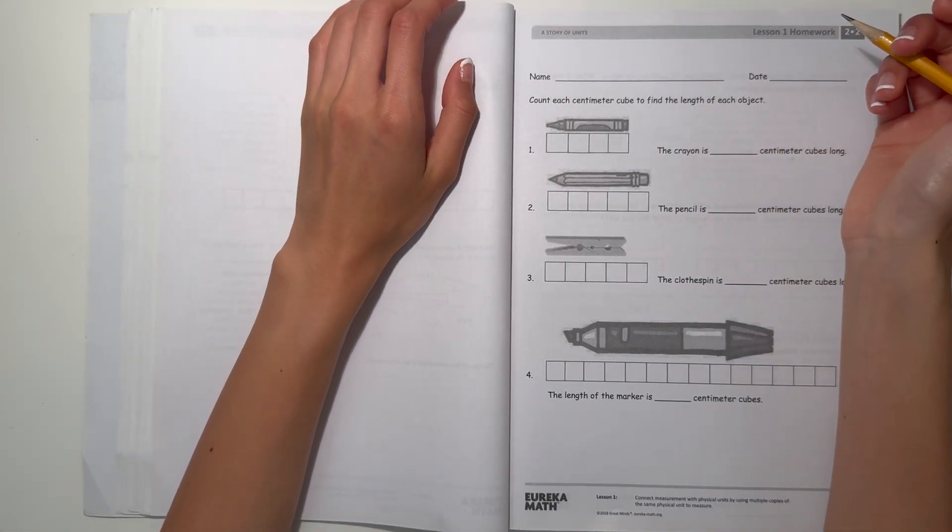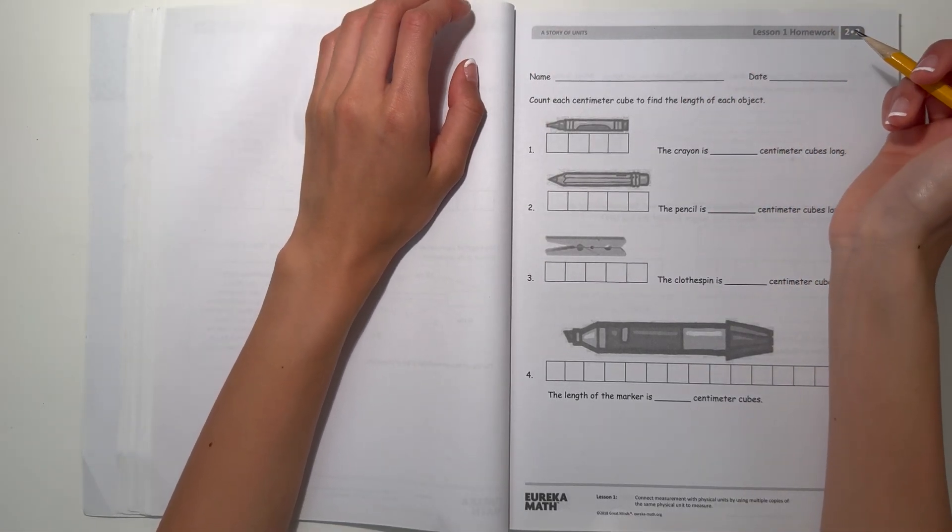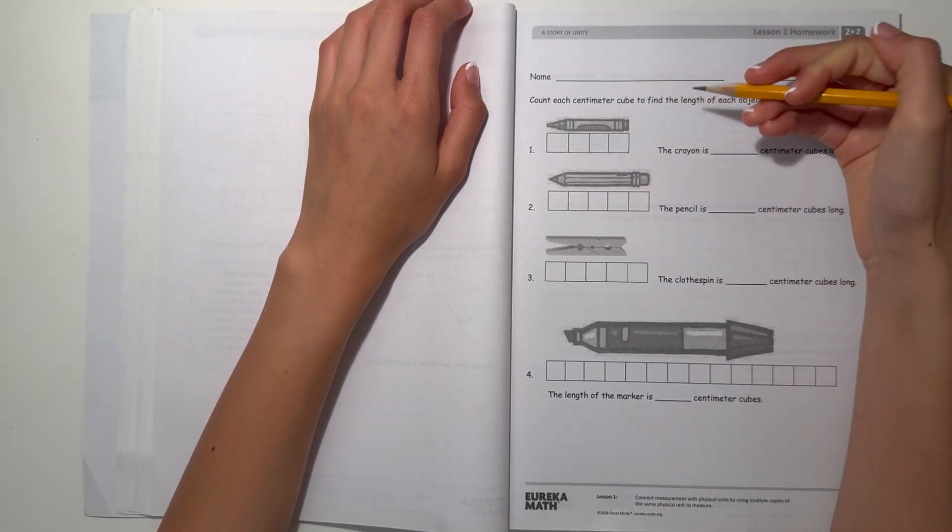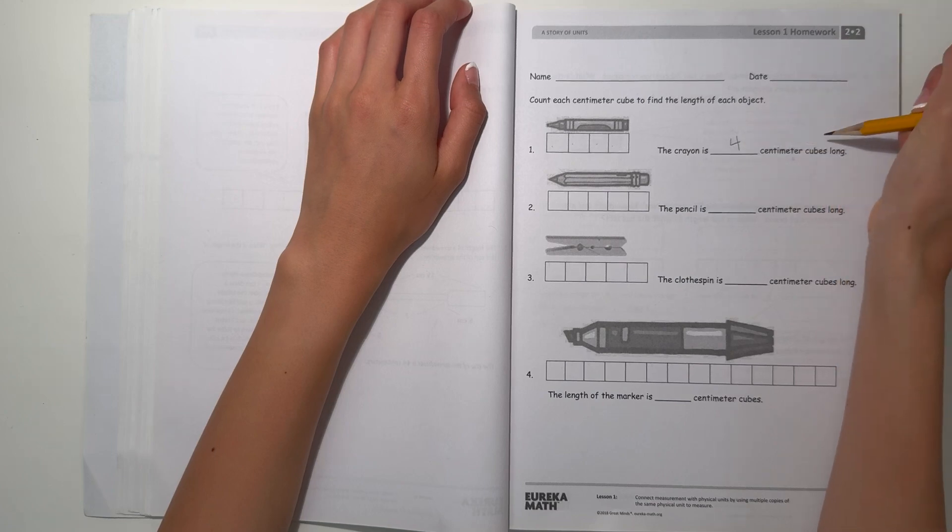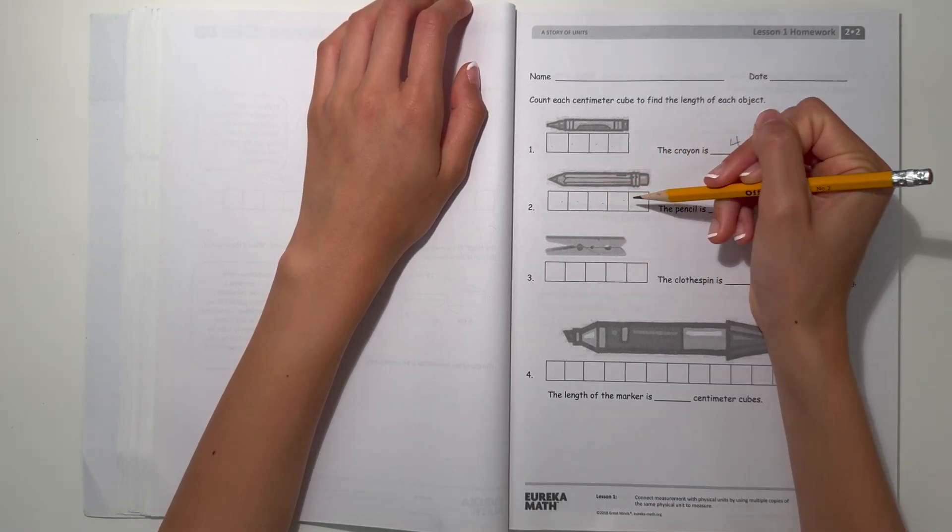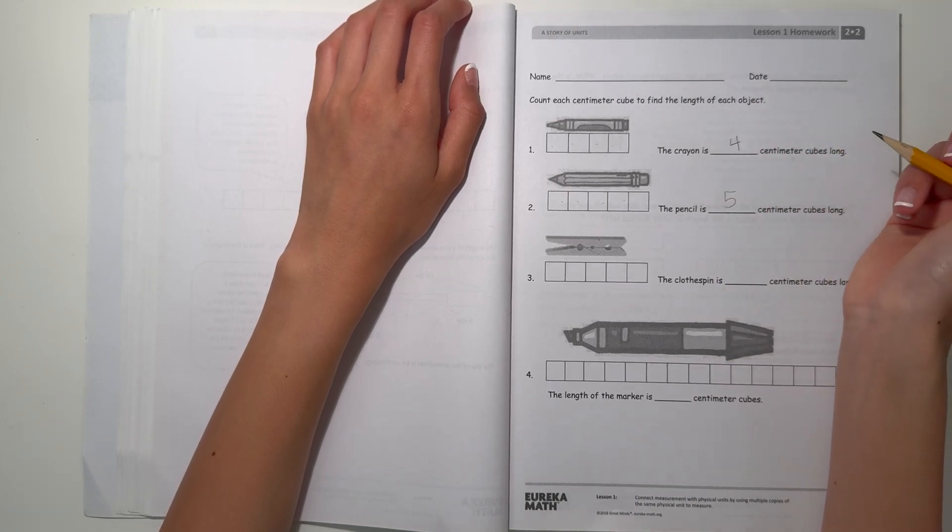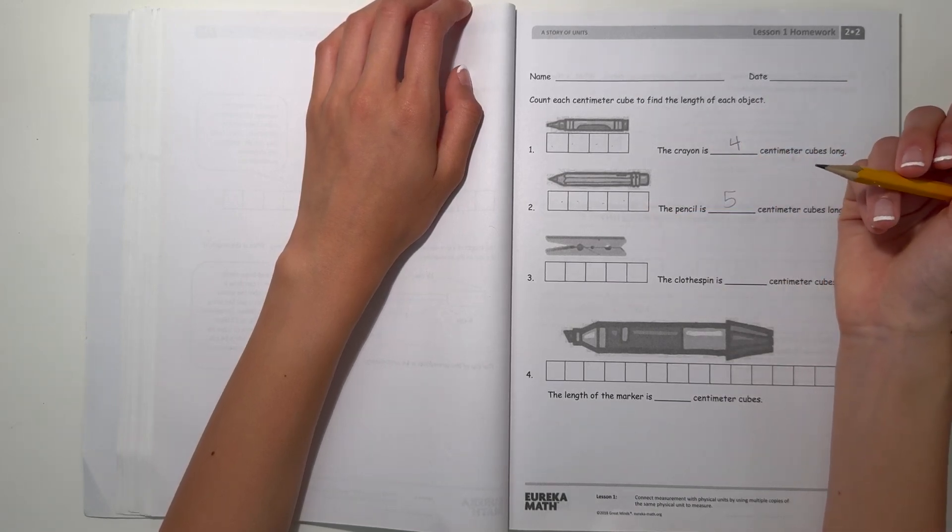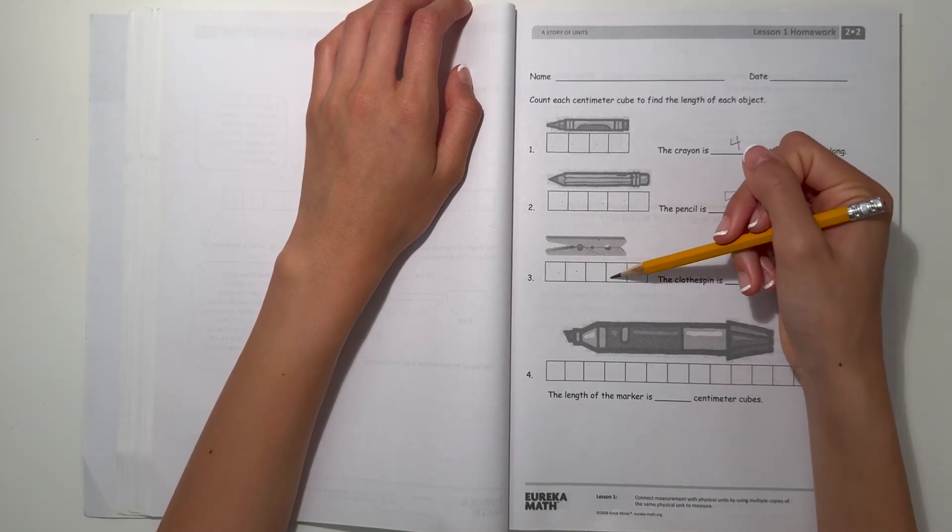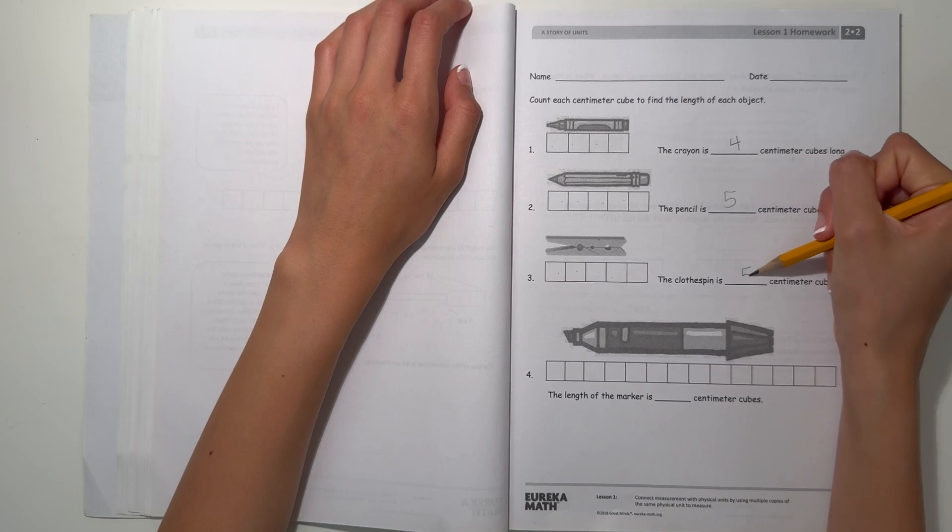Count each centimeter cube to find the length of each object. Number 1, the crayon. We see 4 cubes here, so the crayon is 4 centimeter cubes long. The pencil is 1, 2, 3, 4, 5, so it's 5 centimeter cubes long. We're just counting how many cubes there are. The clothespin is 1, 2, 3, 4, 5 centimeter cubes long also.